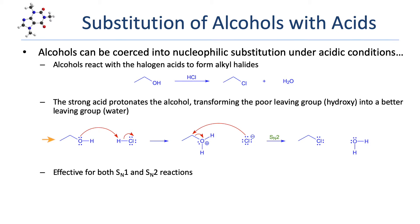Protonation of that oxygen forms an alkoxonium ion. The positive charge of the alkoxonium ion makes it considerably more electrophilic than the initial alcohol. More importantly, protonation of the alcohol has resulted in transforming the leaving group from hydroxide, a poor leaving group, into water, a much, much better leaving group. After the protonation step, the expected nucleophilic substitution occurs. Because the leaving group is attached to a primary carbon, the reaction mechanism will be SN2. So the nucleophile, chloride, attacks the carbon and displaces water as a leaving group.